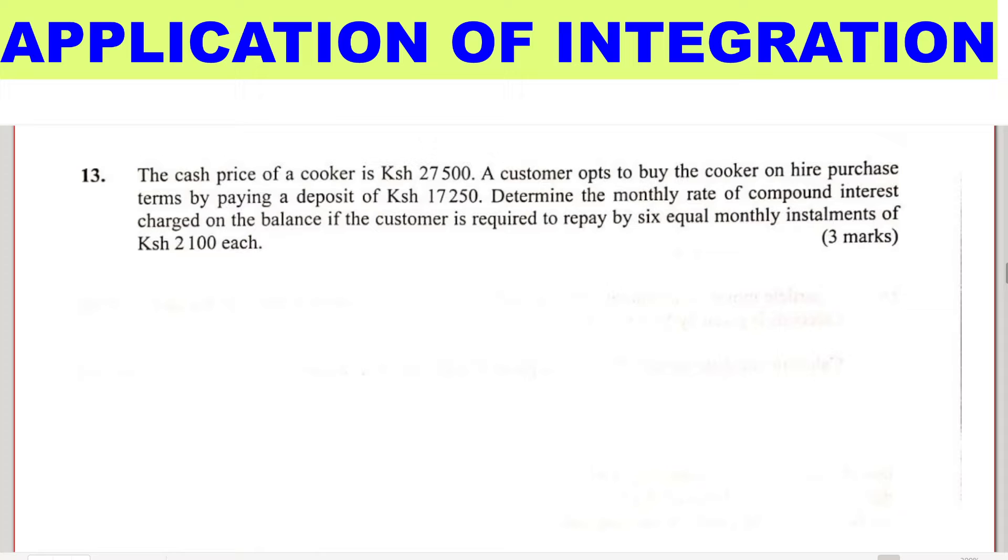To start with, the cash price is given as $27,500, then the customer opts to buy on hire purchase by paying a deposit of $17,250. At that point, we'll get the remaining amount of money. The cash price is $27,500 and the customer pays a deposit of $17,250.